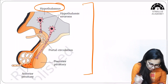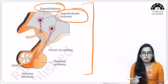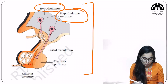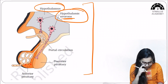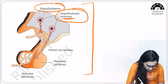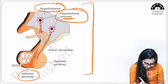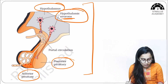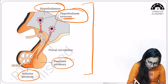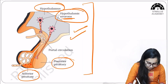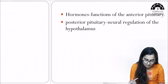In this NCERT diagram, we can see the hypothalamus and the hypothalamic neurosecretory neurons. These neurons innervate both the anterior pituitary and the posterior pituitary. We'll be discussing the other features of this diagram in the next slides.